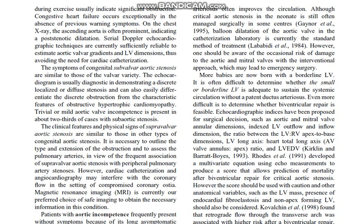It is necessary to outline the type and extension of the obstruction and to assess the pulmonary arteries in view of the frequent association of subvalvular aortic stenosis with peripheral pulmonary artery stenosis. However, cardiac catheterization and angiography may interfere with coronary flow in the setting of compromised coronary ostia. Magnetic resonance imaging is currently our preferred choice of safe imaging to obtain the necessary information in this condition.